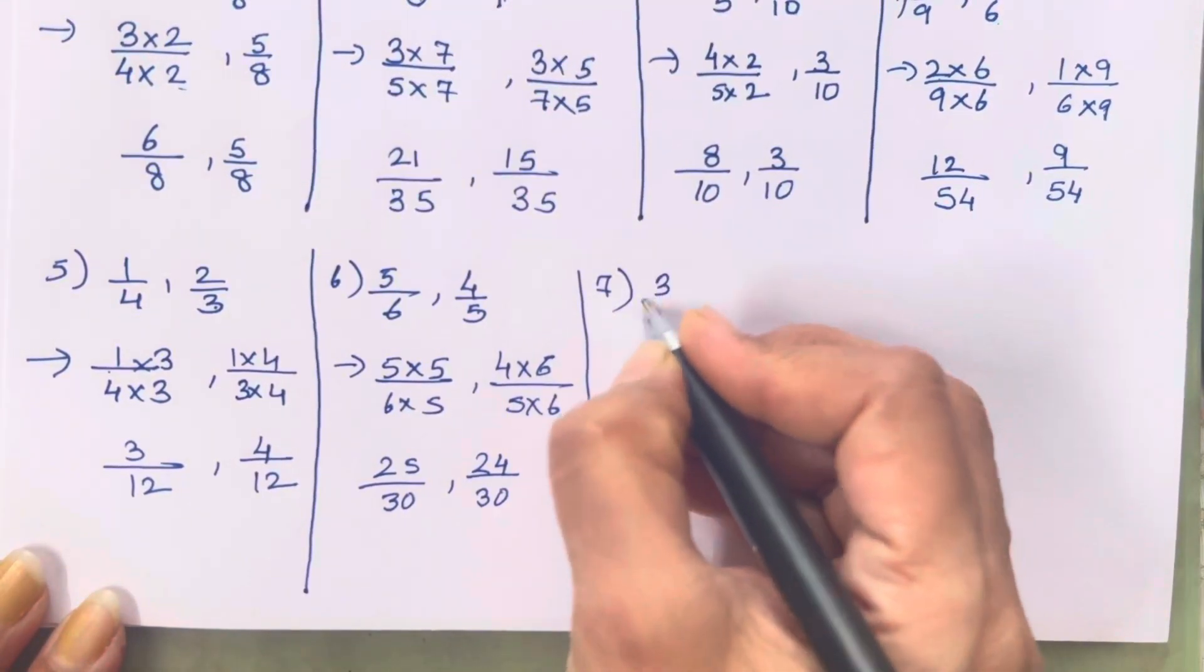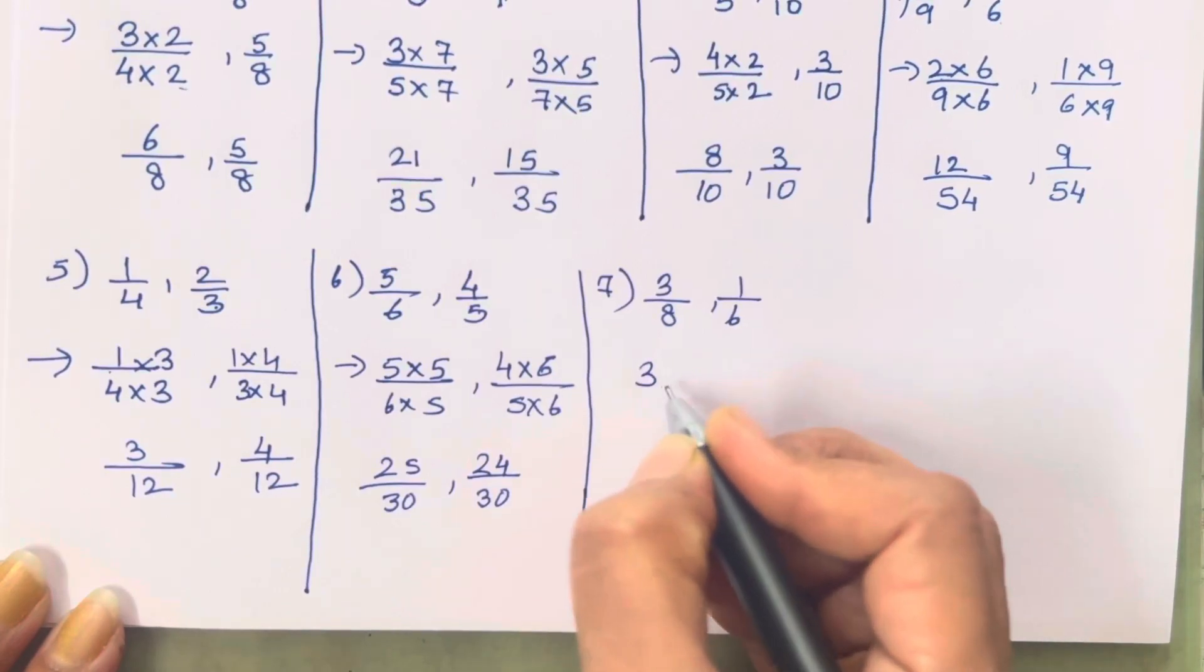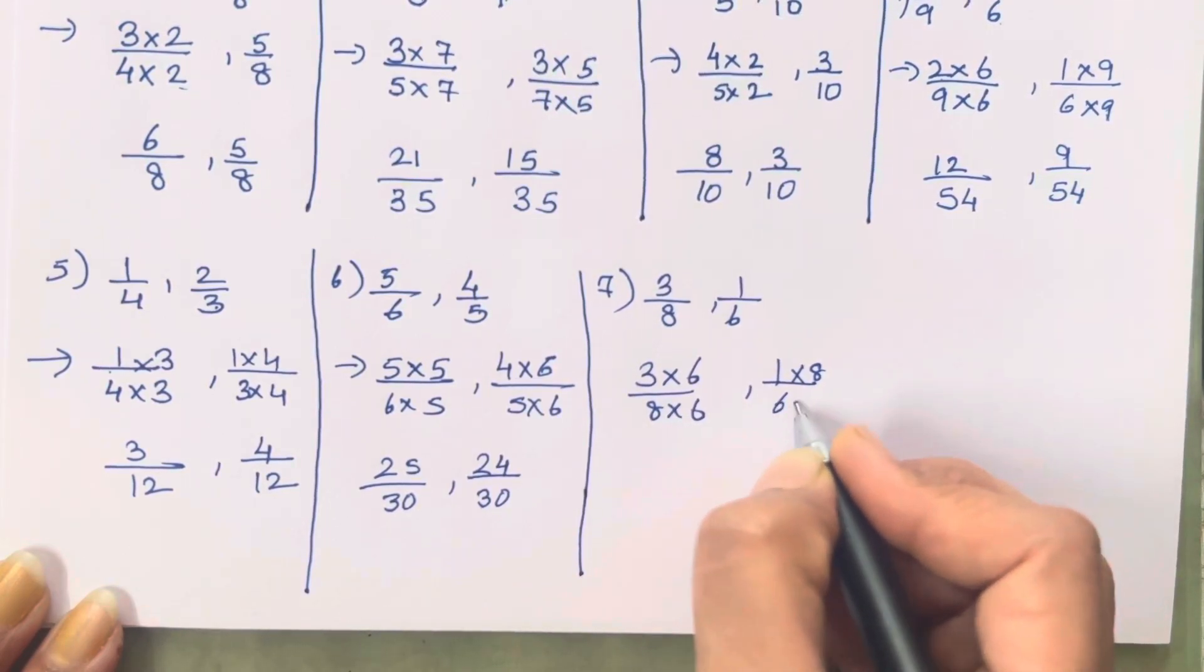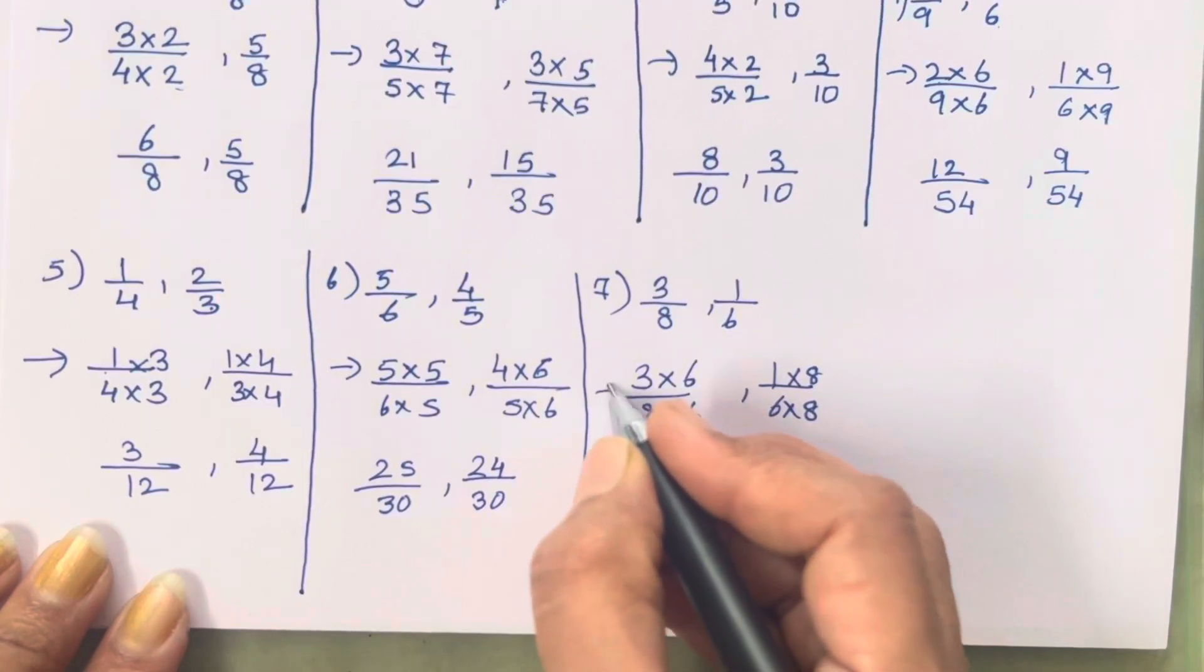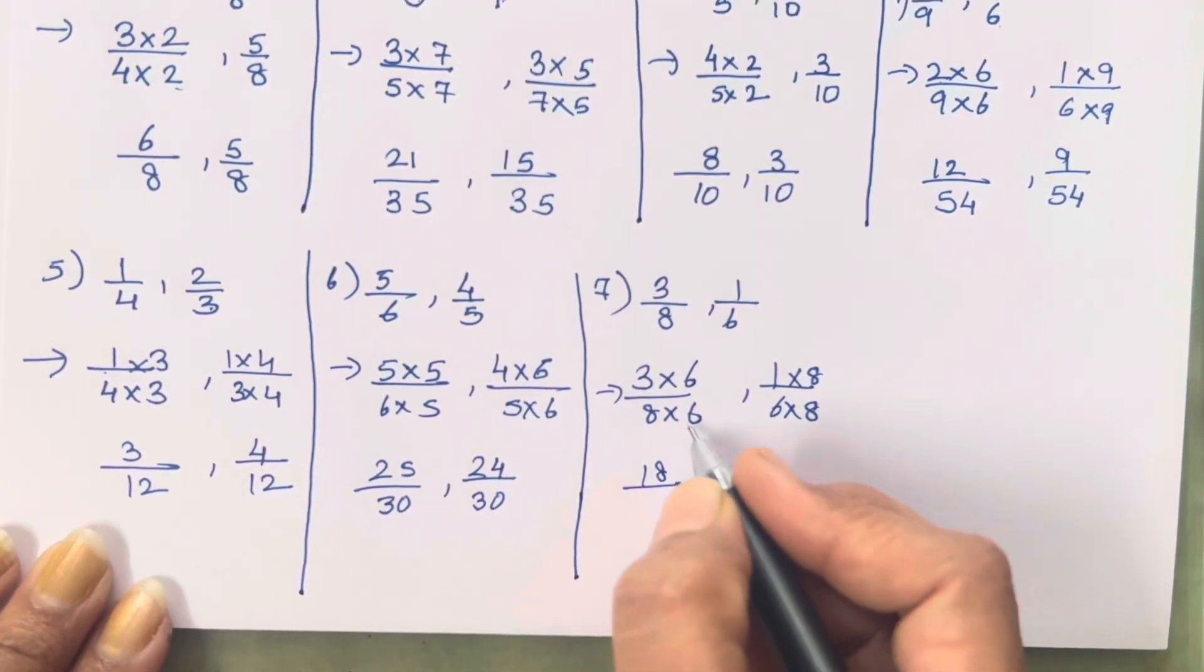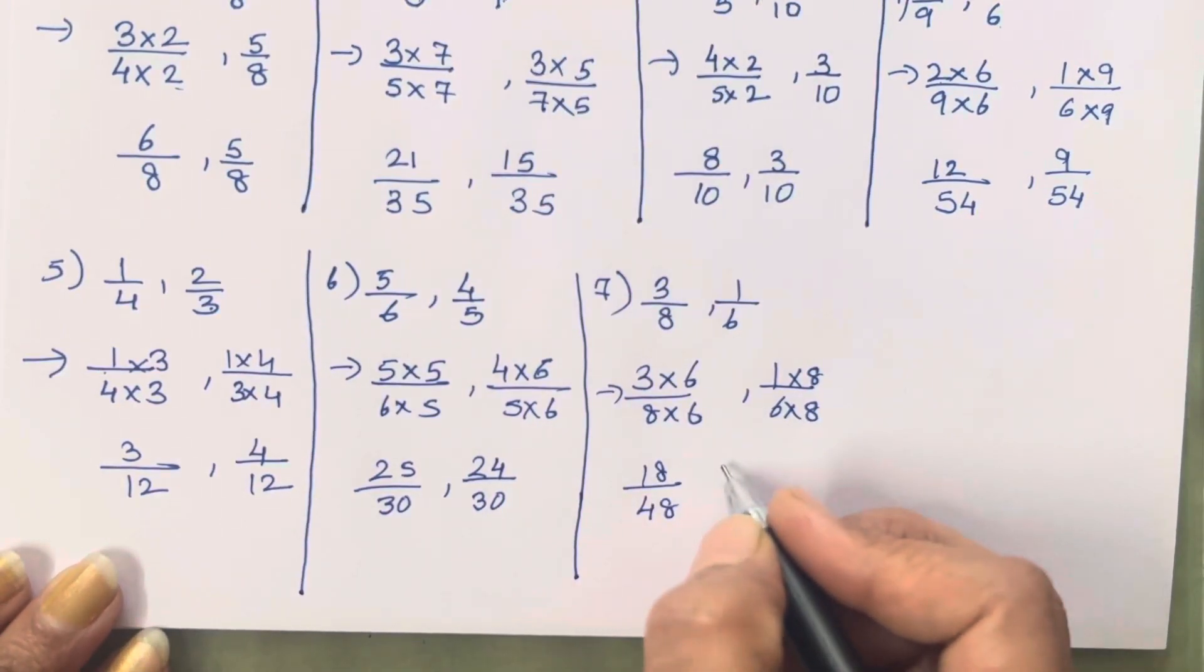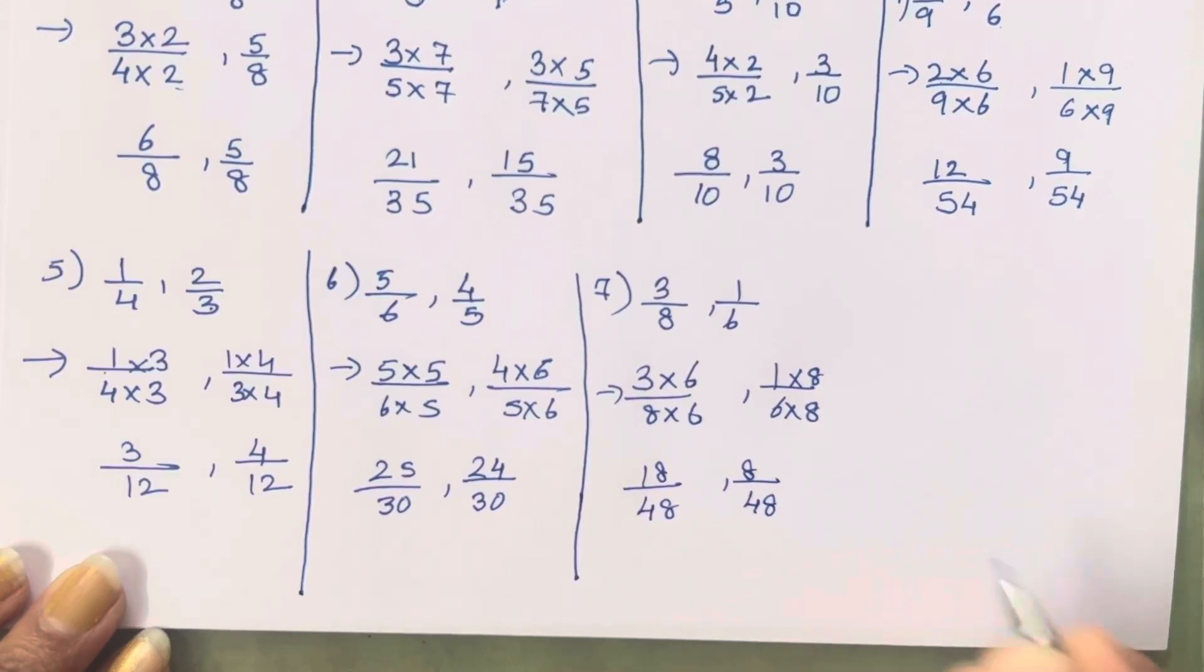Seventh one is 3 upon 8 and 1 upon 6. So 3 into 6, 8 into 6. 1 into 8, 6 into 8. So 3 6s are 18, and 6 8s or 8 6s are 48. So 8 1s are 8, 6 8s are 48.